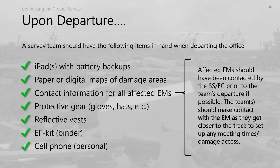Upon departure, the survey team should have iPads — with battery backups, which are a must these days — track maps, contact info for EMs so you can reach them en route for updated information, protective gear, and the EF scale kit binder as a reference backup.